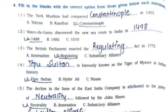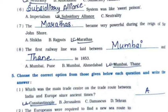Fourth: Tipu Sultan is famously known as the Tiger of Mysore in Indian history — option A. Fifth: The decline in the fame of the East India Company is attributed to the policy of neutrality followed by Sir John Shore — option A. Sixth: The Subsidiary Alliance System was the sweet poison — option B.